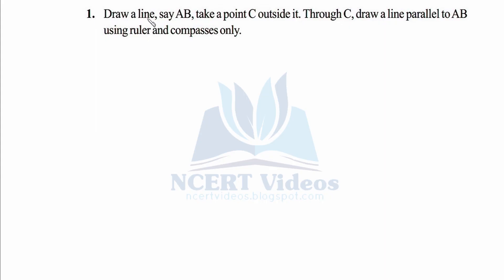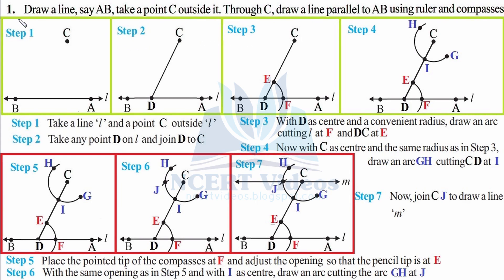Question one: draw a line, name it AB, take a point C outside it, then through C draw a line parallel to AB using ruler and compasses only. In this question we have to follow certain steps. We draw a line first and name it AB, which can also be represented with small l. Remember from previous classes that a line is endless, so we represent it with arrow signs at both ends.